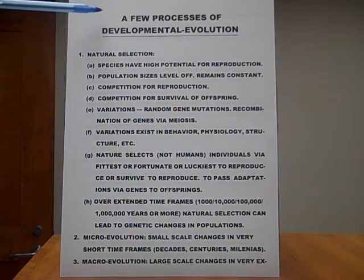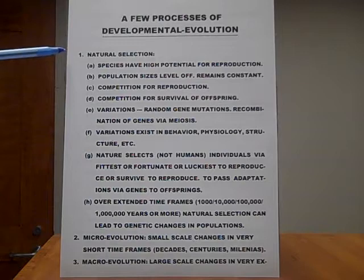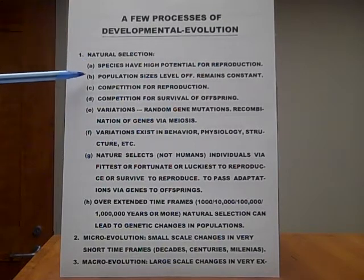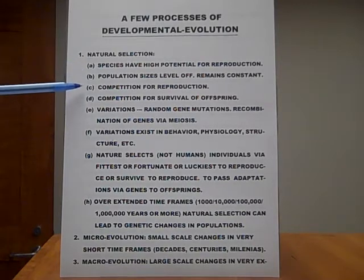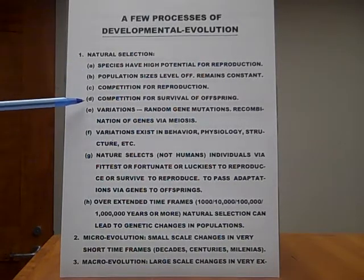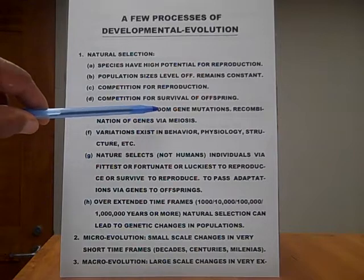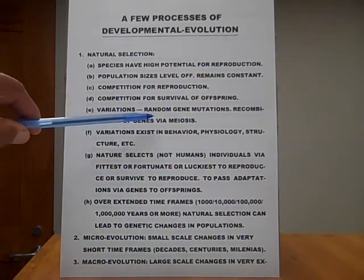A few processes of developmental evolution. Number one, natural selection. A: Species have high potential for reproduction. B: Population sizes levels off, remains constant. C: Competition for reproduction. D: Competition for survival of offspring. E: Variations, meaning random gene mutations, recombination of genes via meiosis.